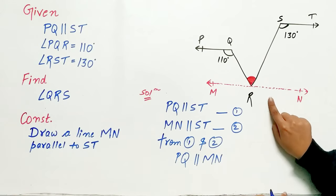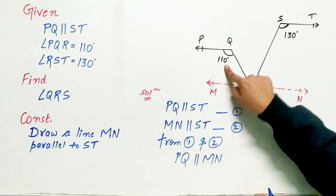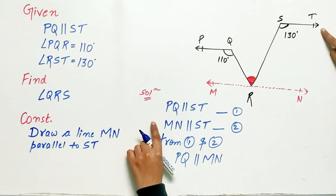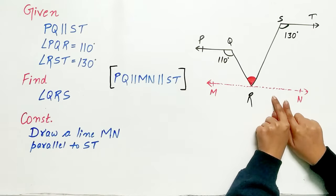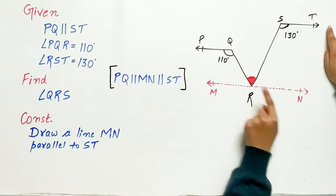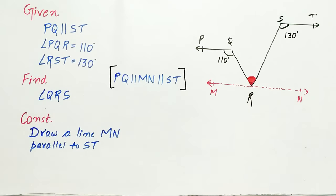Hence MN is parallel to PQ and MN is also parallel to ST. It means PQ is parallel to MN, MN is parallel to ST. That means all three lines are parallel to each other.